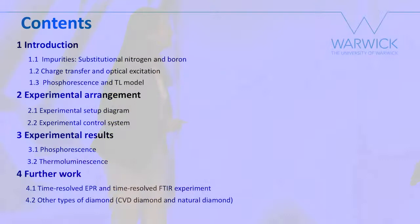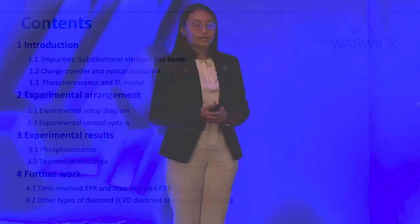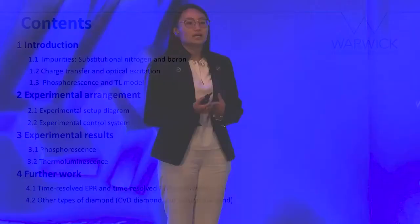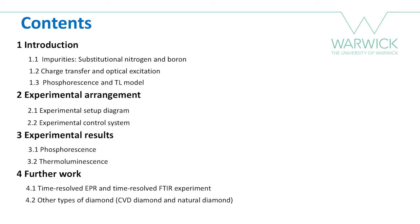My presentation includes four sections. Firstly, I will introduce two types of well-known defects which play an important role in high-pressure high-temperature diamond phosphorescence. Secondly, the experimental arrangement we have built at Warwick to study the dynamics and spectra of phosphorescence, thermoluminescence, and photoluminescence in HPHT diamond, CVD diamond, and certain natural diamond. The third part presents early experimental data and highlights challenges for data acquisition and fitting, and finally, the future work.